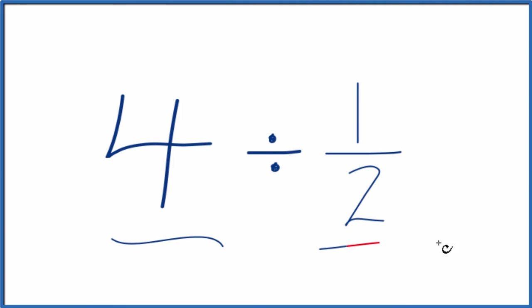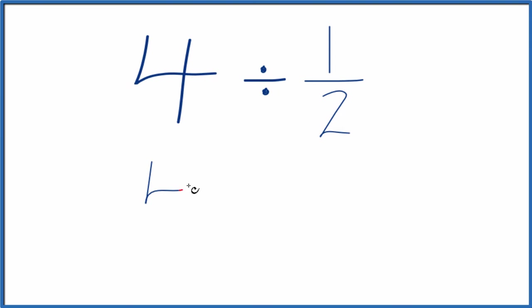Let's divide 4 by 1 half. Here's how we can do that. Let's call 4 4 over 1. It's still 4, we're just dividing by 1, but now we have this fraction that's going to help us.